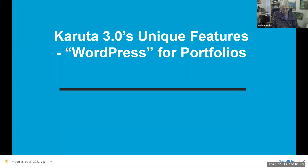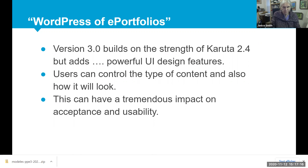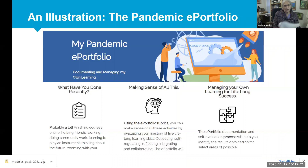Caruda can be thought of as a WordPress for ePortfolios because in using Caruda, you start with a blank page. You add sections and resources. You set roles for each use of a section and resource, and you determine the appearance of each section and resource. This will result in your own unique portfolio template with your own unique look and feel. Version 3.0 of Caruda builds on the strength of 2.4, but adds powerful user interface design features. Users can control the type of content they use and how the content will look, which has tremendous impact on acceptance and usability.